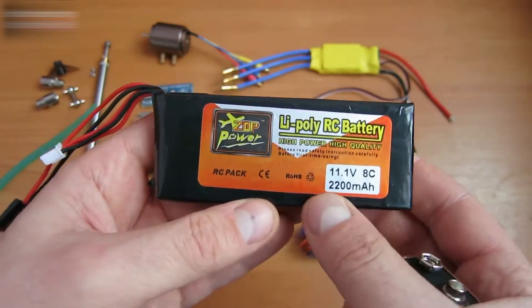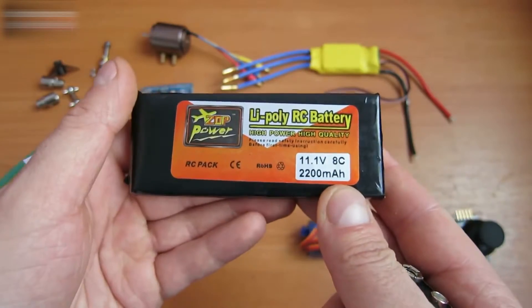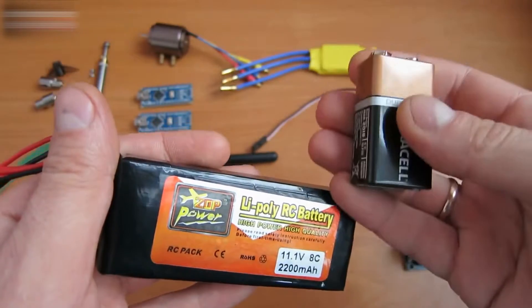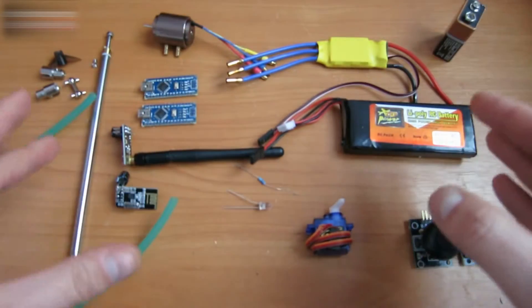An 11.1V battery will be installed on the boat. That is 2200mAh, a 9V battery for the joysticks. All the links for all the equipment used are in the video description below.